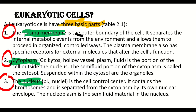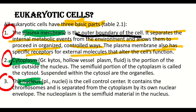The plasma membrane is the outer boundary of the cell. It separates the internal metabolic events from the environment and allows them to proceed in an organized, controlled way. It also has specific receptors for external molecules that alter the cell's function. The cytoplasm is the portion of the cell outside the nucleus. The semi-fluid portion of the cytoplasm is called cytosol, and suspended within the cytosol are the organelles.